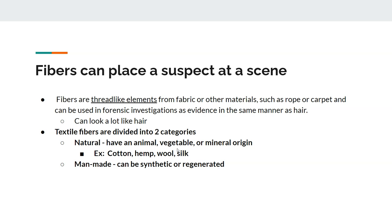Fibers are another element that can place a suspect at a crime scene, but they can also look a lot like hair, so it's very important to examine them thoroughly. Textile fibers are divided into natural fibers or man-made. Natural fibers have either animal, vegetable, or mineral origin — such as cotton, hemp, wool, or silk. Man-made fibers can be synthetic or regenerated fibers, made in a lab or commercial mill.